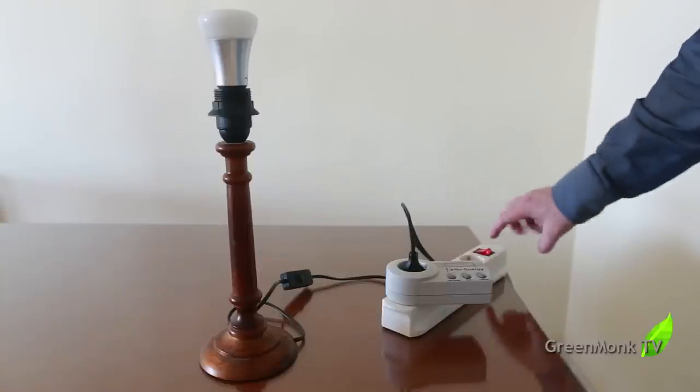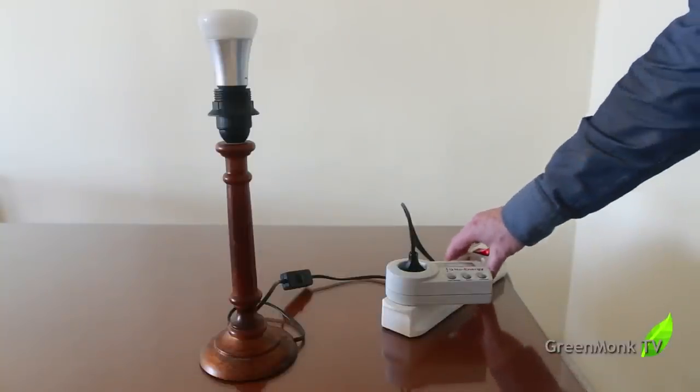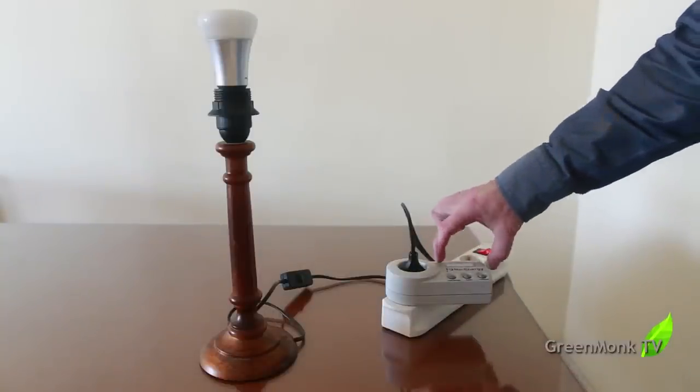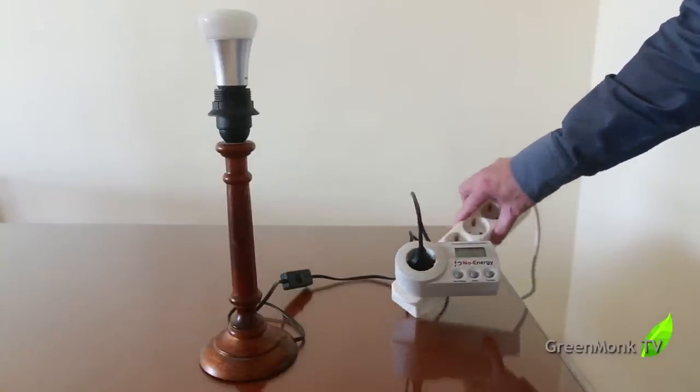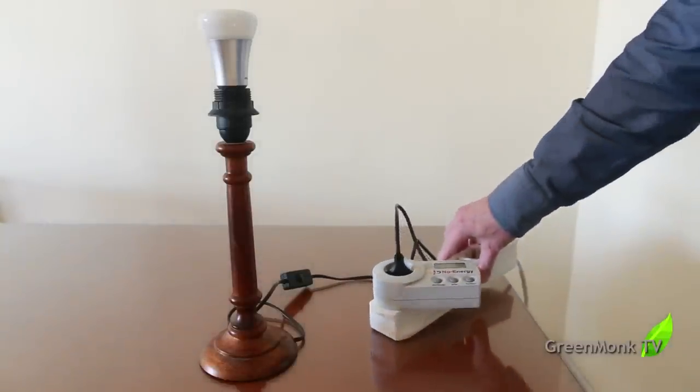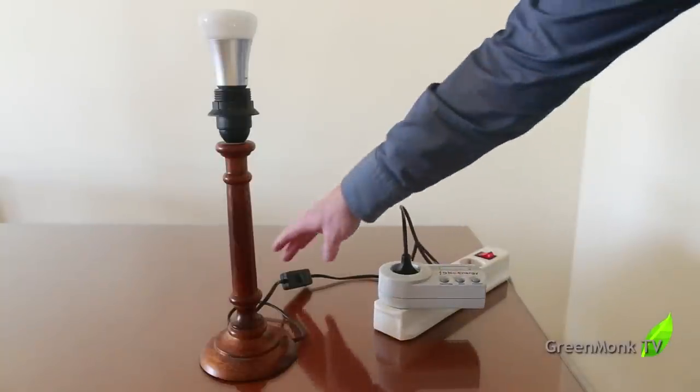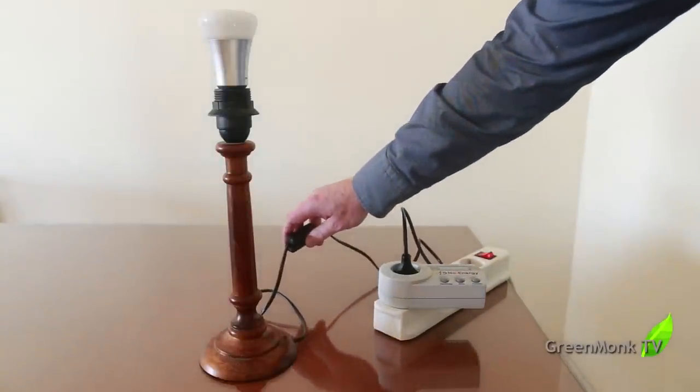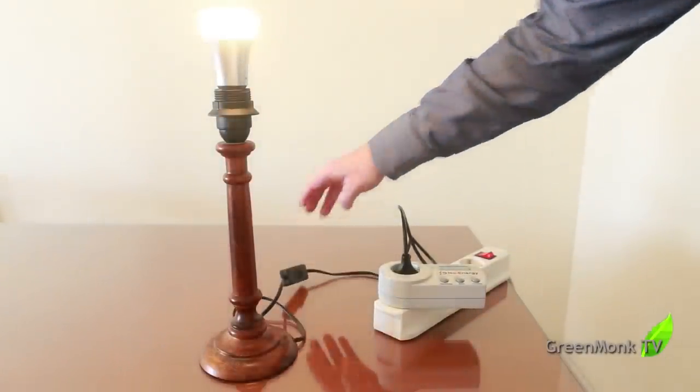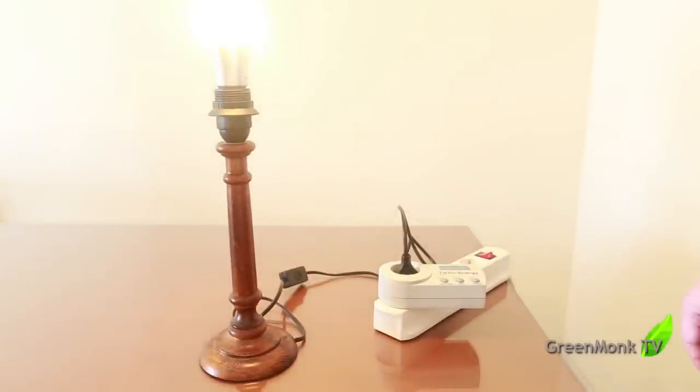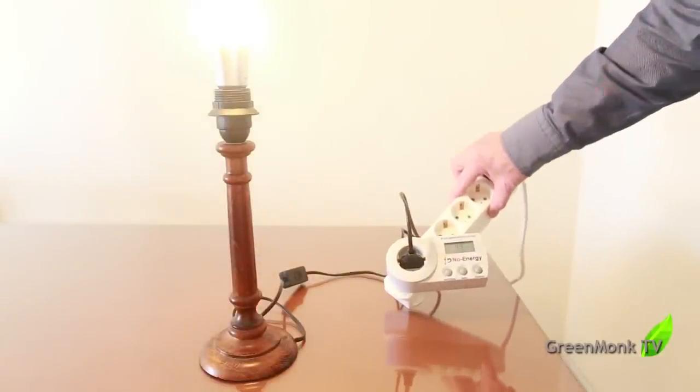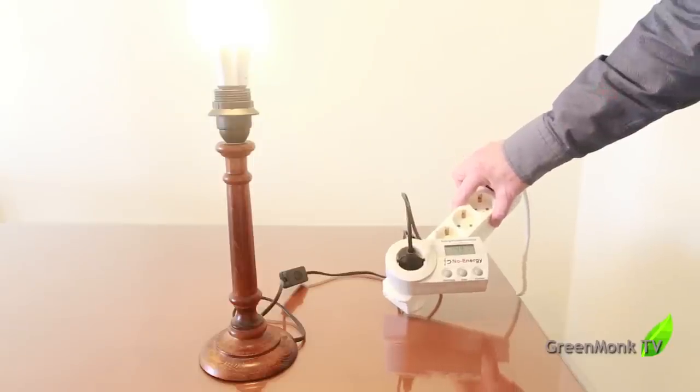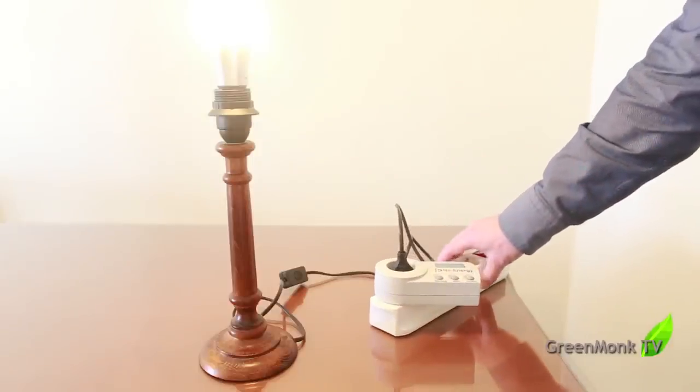Right now I have it connected to this power strip and through this power meter so I can see how much energy it's consuming. Right now it's consuming 0 watts because it is turned off at the switch. If I turn it on, the light comes on obviously and the consumption goes up to 4.95 watts. It kind of oscillates between 4.9 and 5 watts.